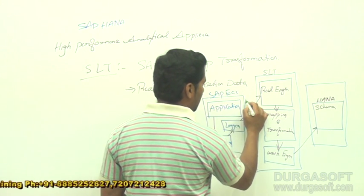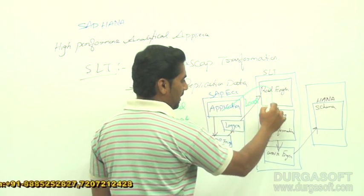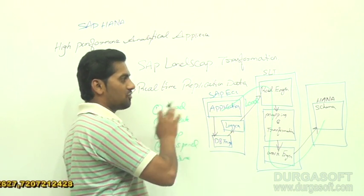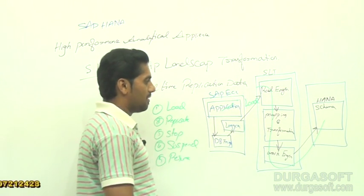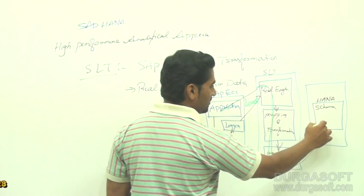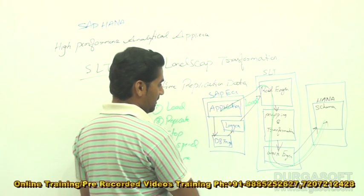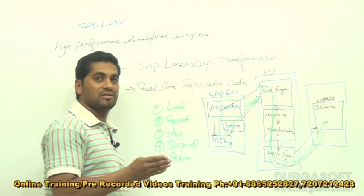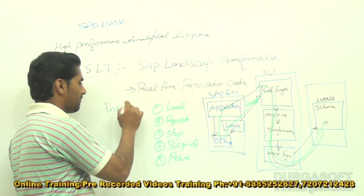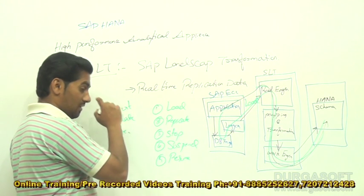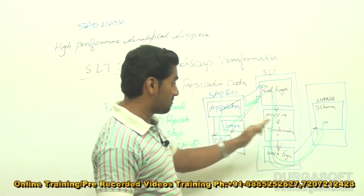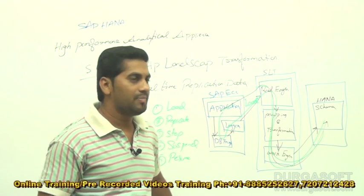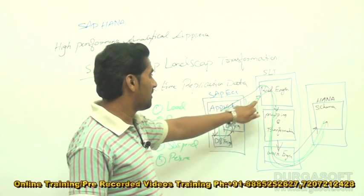When you choose the load option, it loads data from source to target for the first time. When you choose replicate, it continuously mirrors data — any insert, update, or delete in the source system is replicated to the target. The DB trigger captures the most recent data, sends it to the logger file, and the record is read and written to the HANA system. When you choose stop, it halts the connection and no further records are captured.